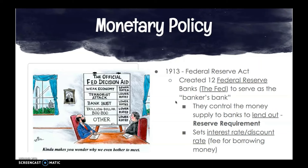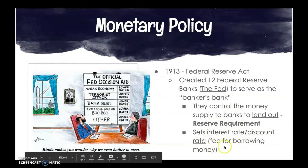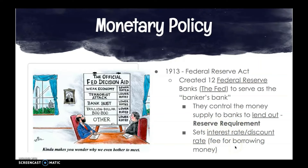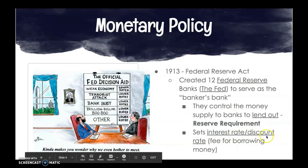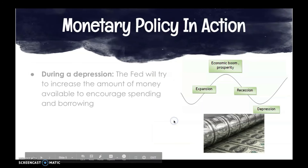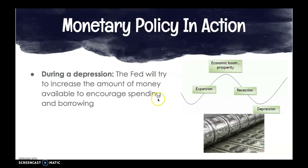When looking at setting interest rates and the discount rate, along with the reserve requirement, these change the amount of money in circulation. Let's use an example — say we're in a depression with an economic downturn. The Fed is all about controlling the amount of money in circulation. If we are down, we want to increase the amount of money available to encourage spending and borrowing.